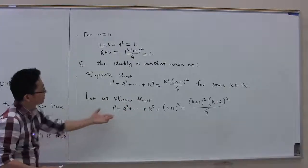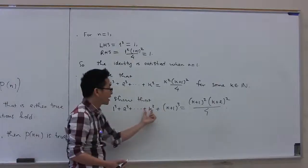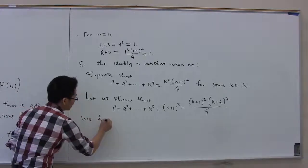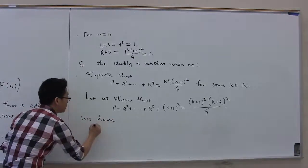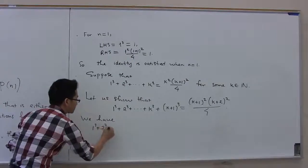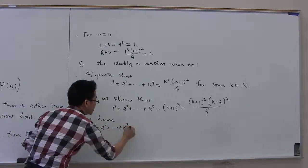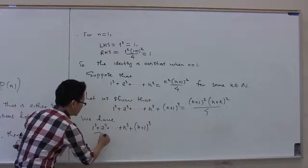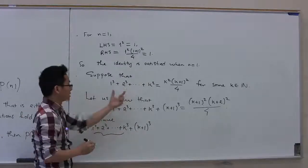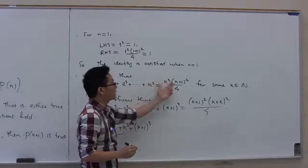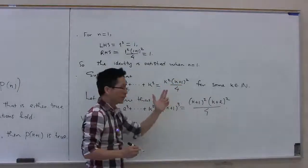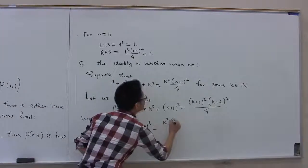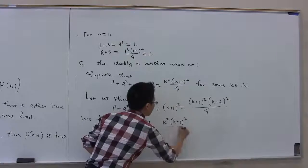So let us start from the left and show that the left-hand side is equal to the right-hand side. The left-hand side is 1 to the third plus so on plus k to the third plus (k+1) to the third. By the inductive hypothesis, the sum up to k to the third is equal to k squared times (k+1) squared over 4. So we replace that portion by k squared times (k+1) squared over 4.